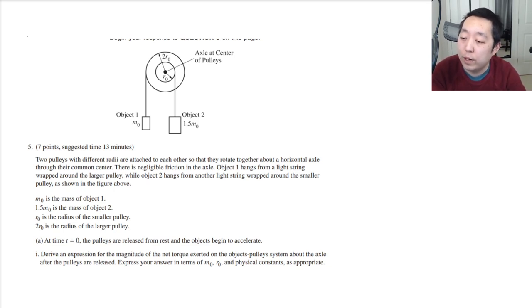Number five. Two pulleys with different radii are attached to each other, so they rotate upon a horizontal axle through the common center. There is negligible friction on the axle. Object one hangs from a light string wrapped around a large pulley, while object two hangs from another light string wrapped around the smaller pulley shown in the figure above.